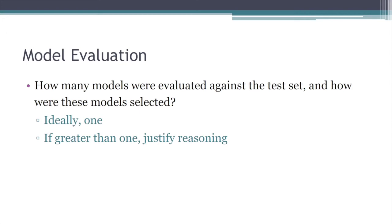In evaluating models, it's really important to understand how many models were built by the developers and evaluated against the test set, and how those models were selected. Ideally they identified one model; if they developed more than one we'd like to understand why. We do see some works where people develop two models to look at the inter-observer agreement between those models — building two AI models to see how close both come to finding the answer.